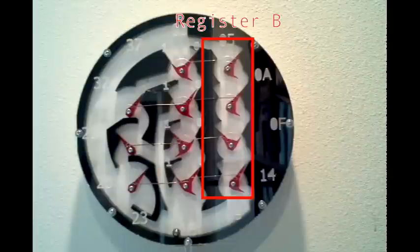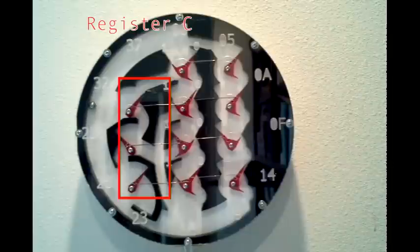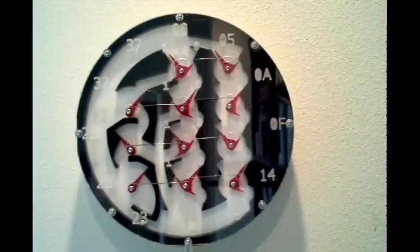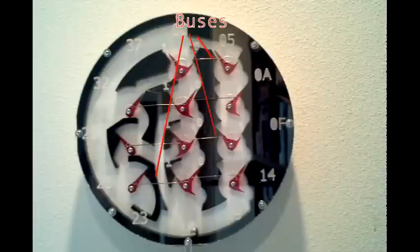Register B is configured to reset the hour to 0 whenever register C is equal to 11. Since we are counting in 0 base, 0 represents 12. The buses are the wires connecting the registers together so that the data from register A is copied over to register B and C.